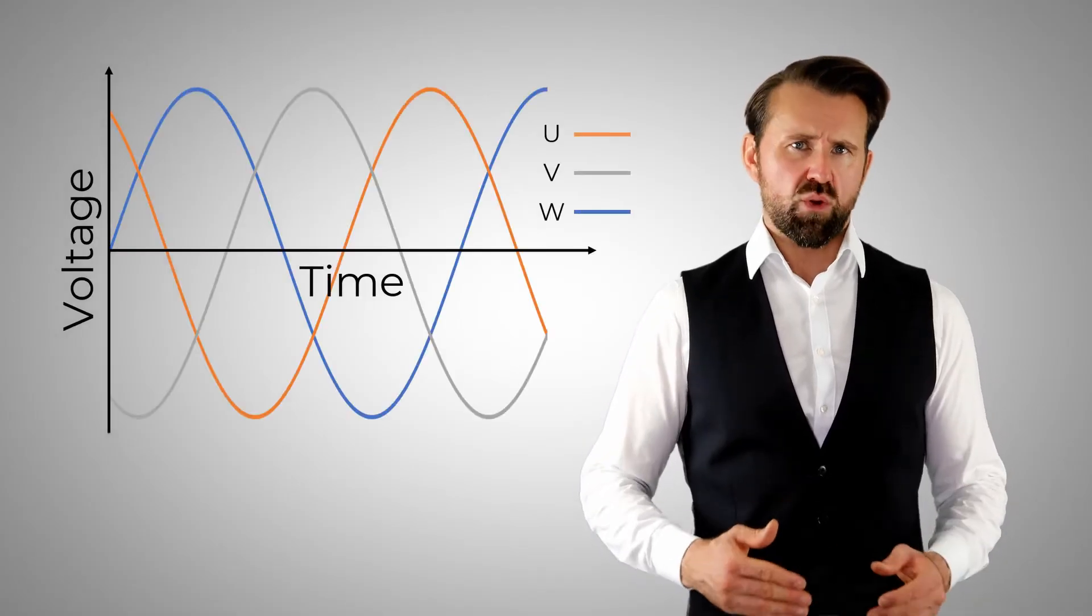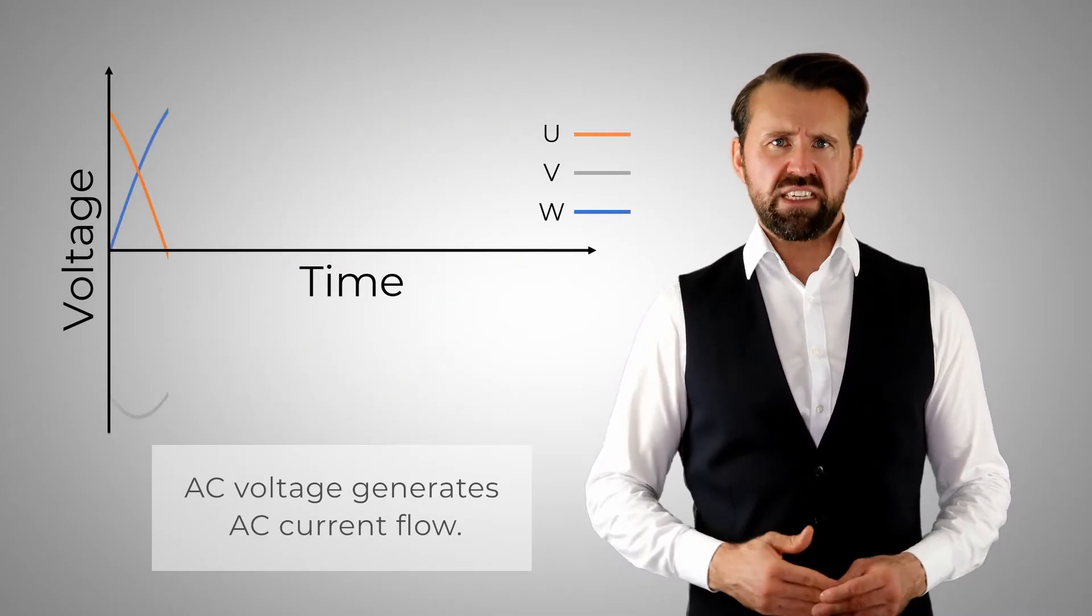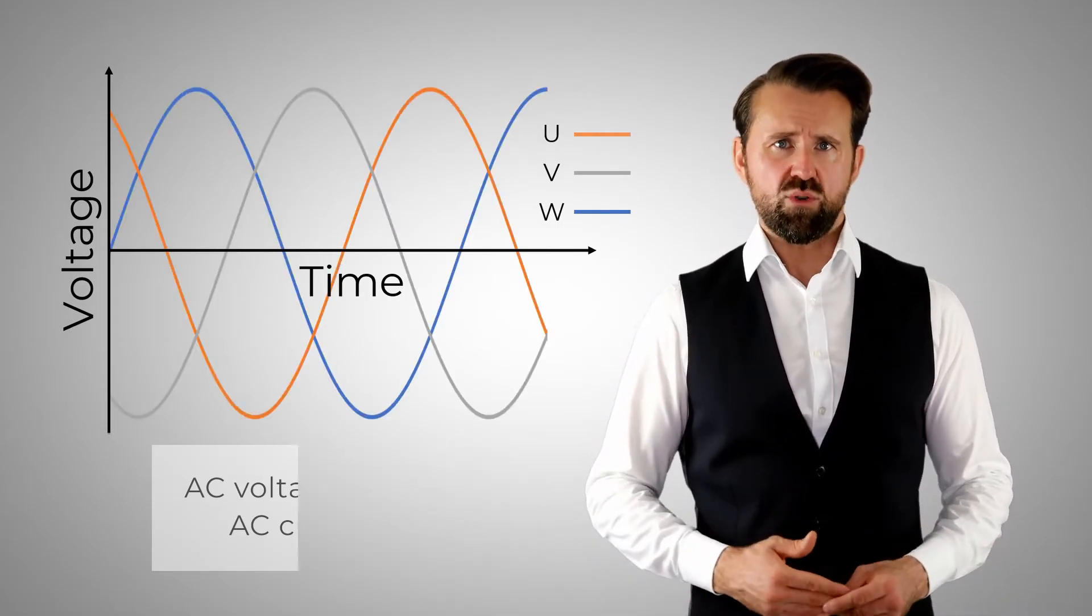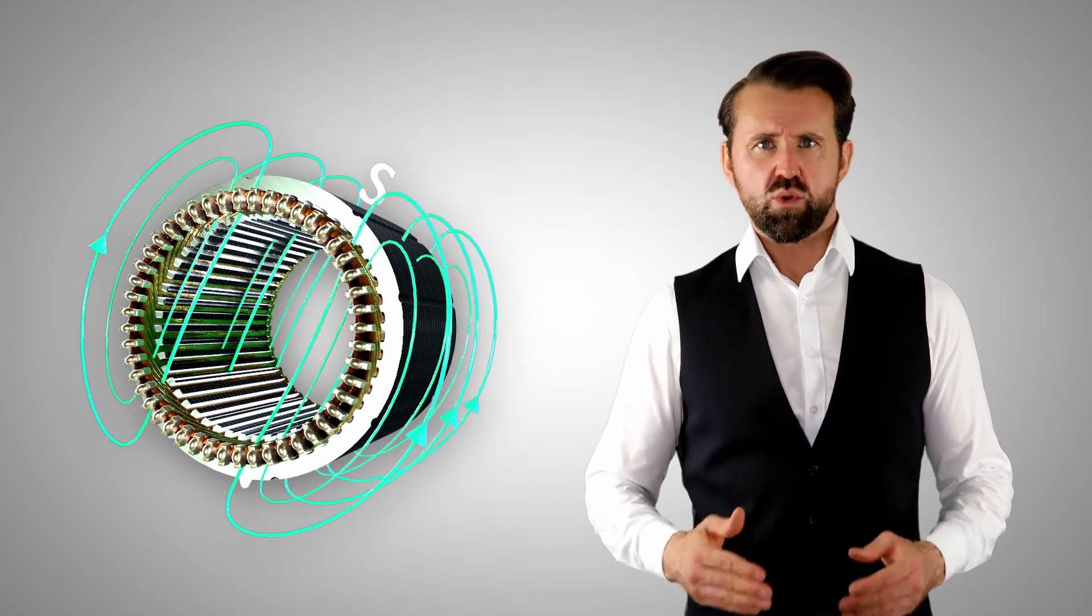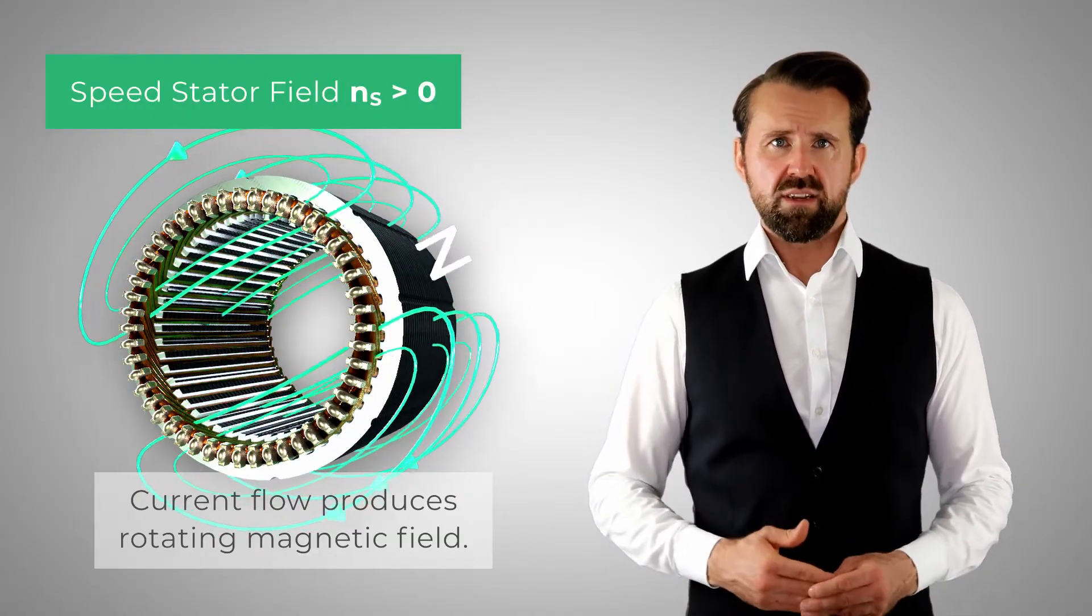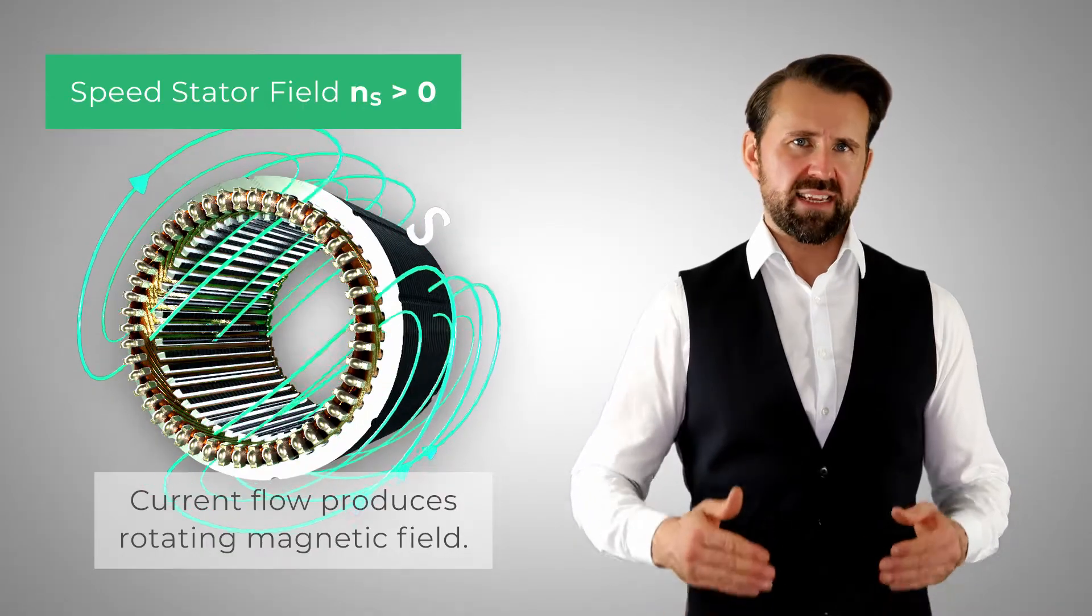Induction motors belong to the group of AC motors and require an alternating current or a three-phase current. So you either use an AC current directly from the power outlet or convert it into a higher or lower frequency with an inverter. When the three-phase AC voltage is connected to the motor terminals U, V, and W, the current flows in the windings, which result in the rotating magnetic field.